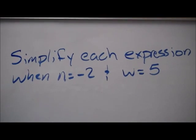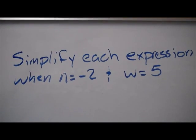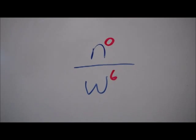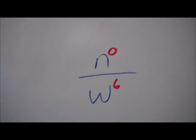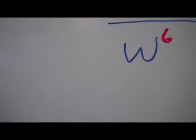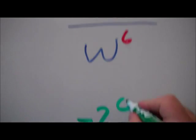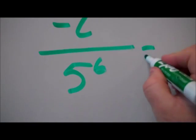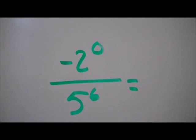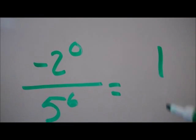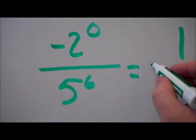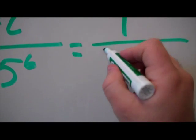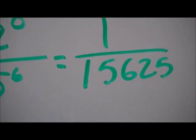Last thing we'll do is simplify each expression when n is negative 2 and w is 5. My first example: n to the zero power over w to the sixth power. I plug in my numbers — it's negative 2 to the zero power over 5 to the sixth power. Any time I have a number, whether negative or positive, to the zero power, my answer will always be 1. 5 to the sixth power is 5 times 5 times 5 times 5 times 5 times 5, which is 15,625.